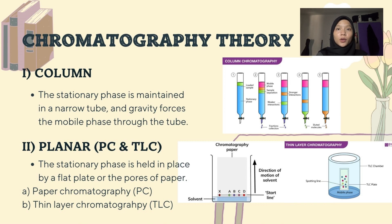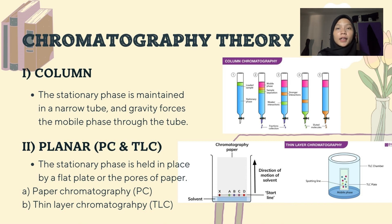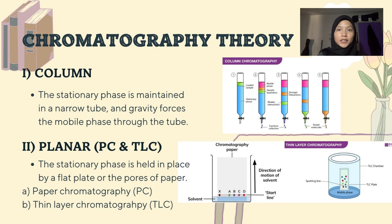There are two types of planar chromatography: paper chromatography (PC) and thin layer chromatography (TLC). PC separates dry liquid samples with a liquid solvent mobile phase and a paper strip stationary phase. TLC spreads dry liquid samples with a liquid solvent mobile phase and a glass plate covered with a thin layer of alumina or silica gel as the stationary phase.